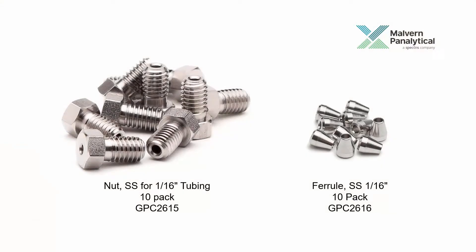This video will demonstrate how to make one of these fittings using a stainless steel nut and a stainless steel ferrule on the end of a piece of Teflon tubing. The nuts and ferrules are available from the Malvern Panalytical online store and can be located by searching for the names and part numbers listed here.